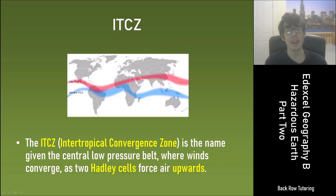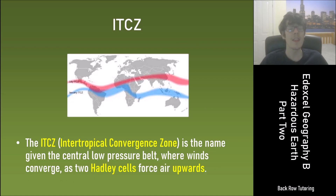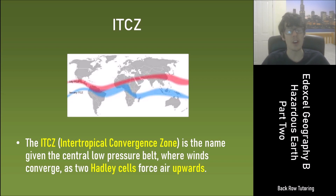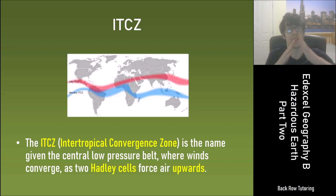You also need to know about the ITCZ. The ITCZ stands for the Intertropical Convergence Zone, and this is the name given to the central low pressure belt where winds converge as two Hadley cells force air upwards.